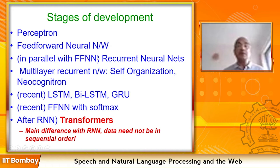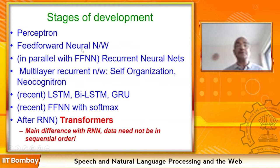In parallel with feed-forward networks, recurrent neural networks were being developed. In feed-forward networks, connections go forward from input to output layer. In recurrent networks, connections can come back from one layer to another. Back-propagation in feed-forward networks should not be confused with this: what gets back-propagated is error — it is an abstract quantity, not a real signal.